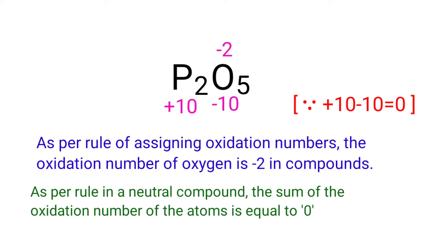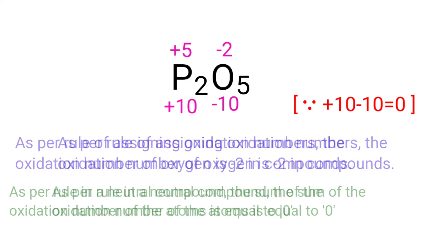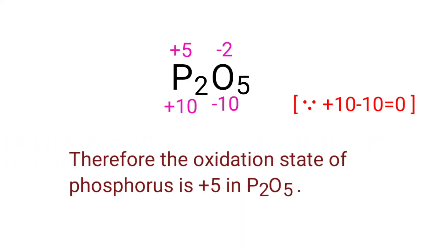In the P2 element, there are two Phosphorus atoms. So we can write the oxidation state of Phosphorus is plus 5. Therefore, the oxidation state of Phosphorus is plus 5 in P2O5.